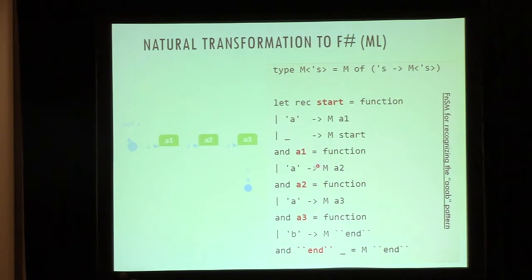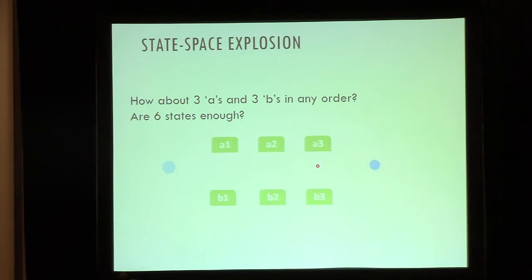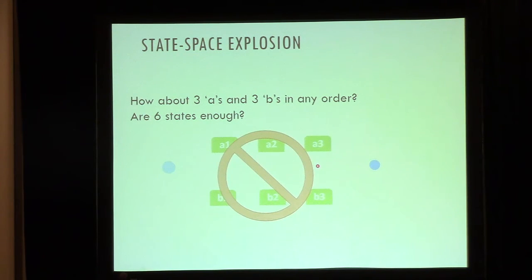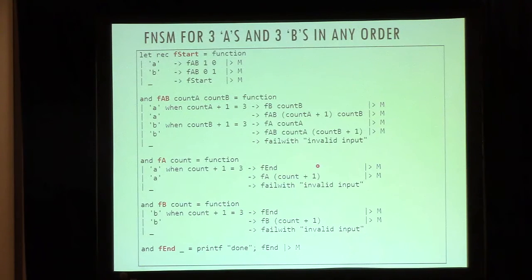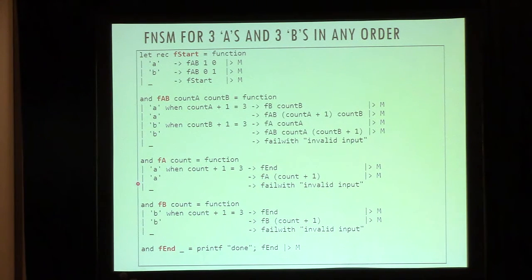Let's make our problem a bit more complex. Assume that instead of the simple pattern, we now want to recognize three A's and three B's, but they can be in any order. One question you can ask is: can I use six states plus or minus a few more and wire up the transitions to recognize this pattern? It turns out that's not the case — you actually need an exponential number of states because you have to deal with permutations. This is known as the state space explosion problem. So the question is: can we do better with functional state machines?